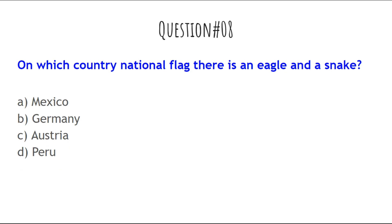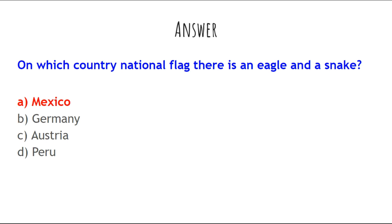The next question is: On which country's national flag is there an eagle and a snake? The options are: Mexico, Germany, Austria, or Peru. The answer is Mexico. If you search for the Mexican flag on Google, you will see an eagle and a snake on it. When you research and visualize something, you are much less likely to forget it. So remember: Mexico's flag has an eagle and a snake.